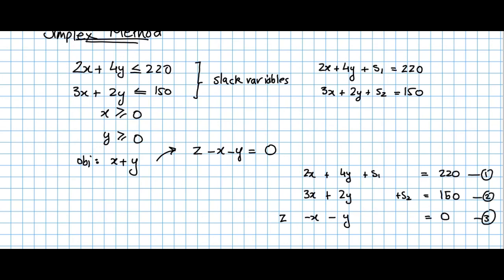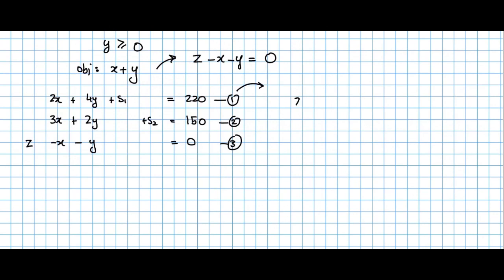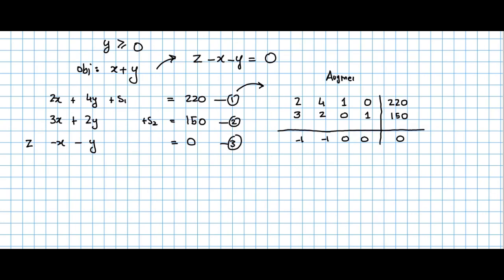We can also represent this in augmented matrix form. The first row is [2, 4, 1, 0 | 220], the second row is [3, 2, 0, 1 | 150], and the objective function row is [−1, −1, 0, 0 | 0]. So this is the augmented matrix representation of our linear problem.